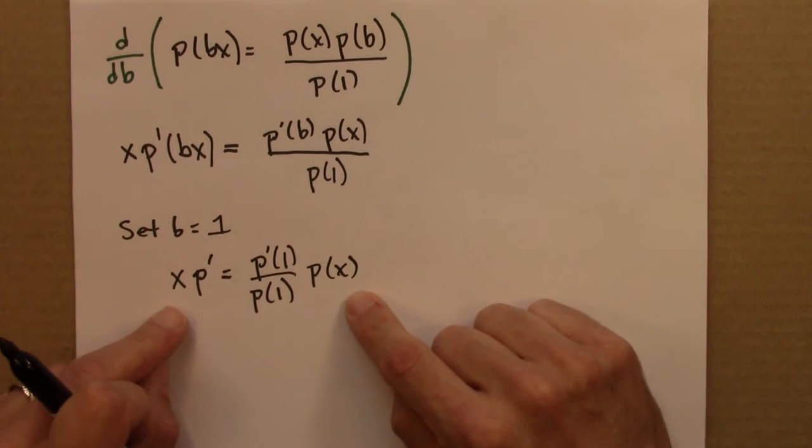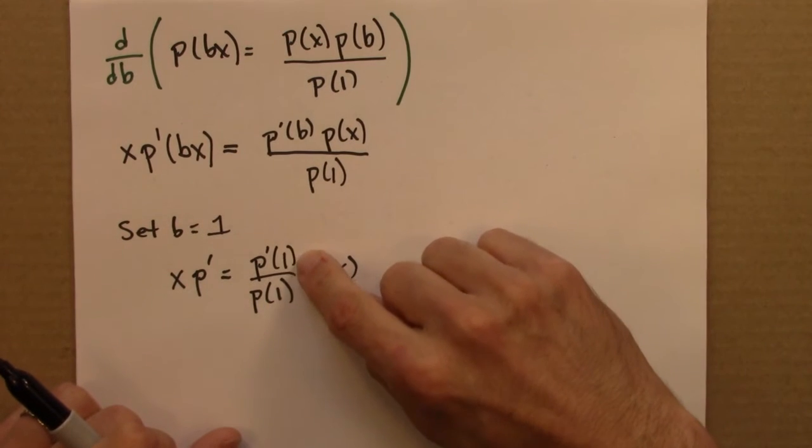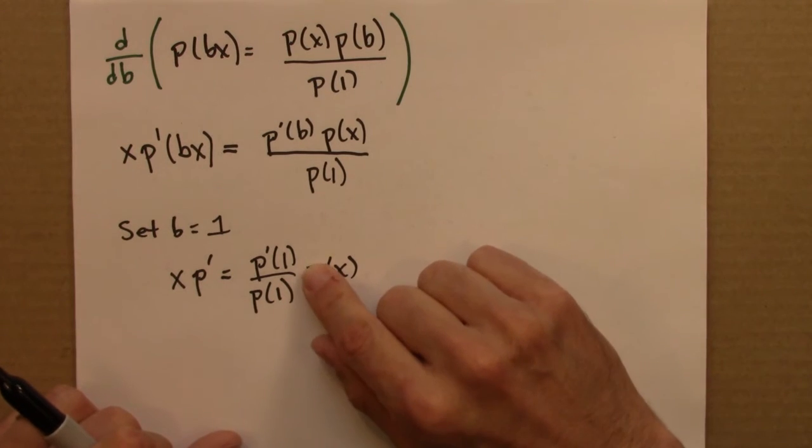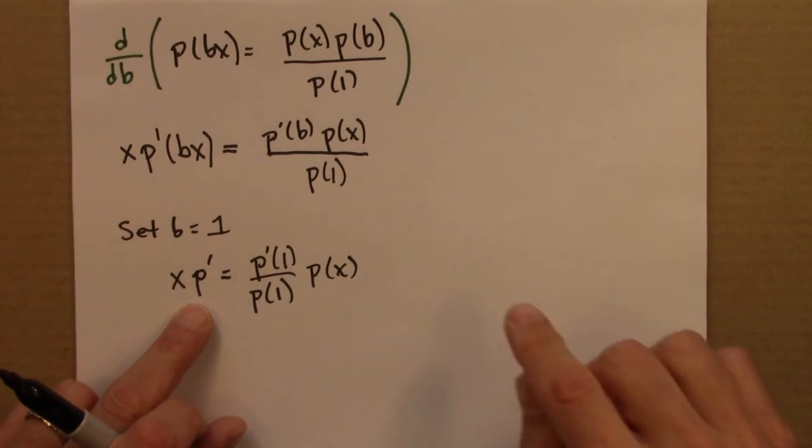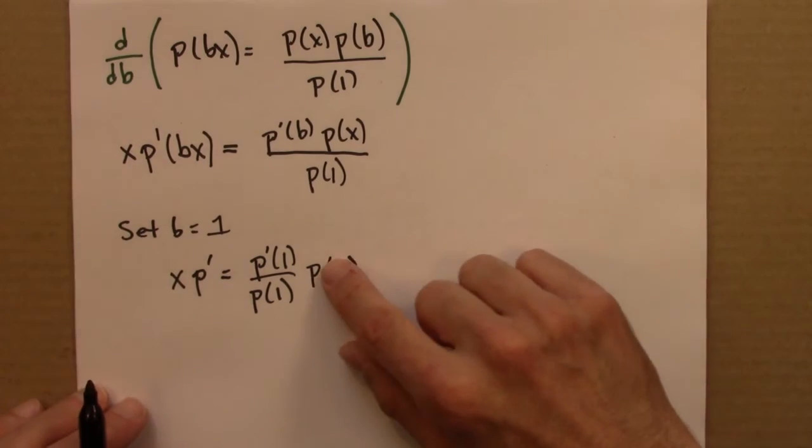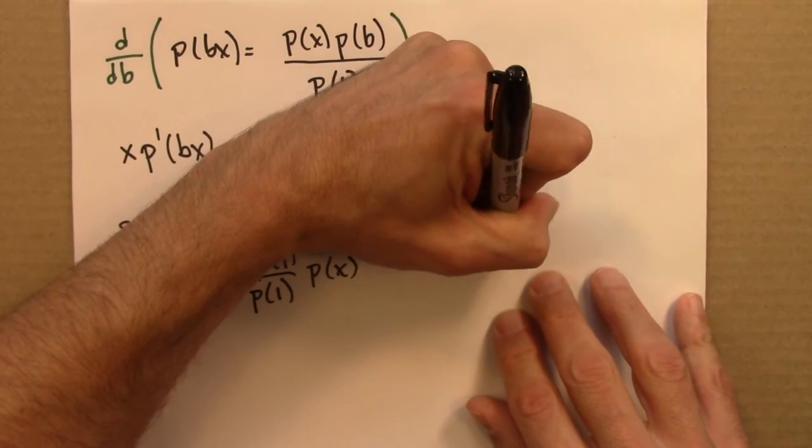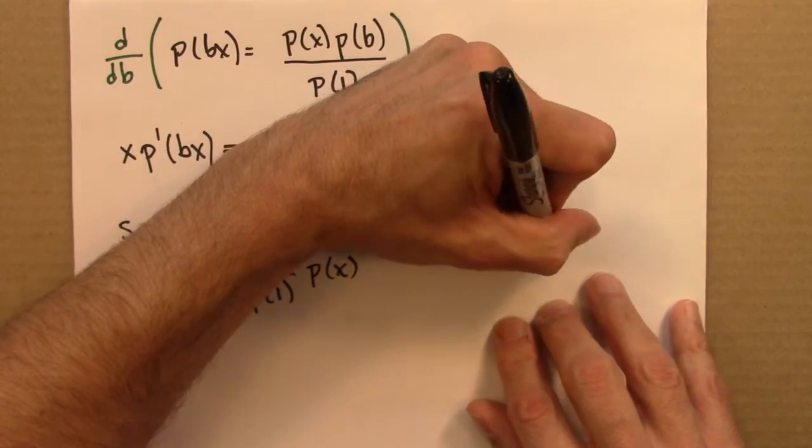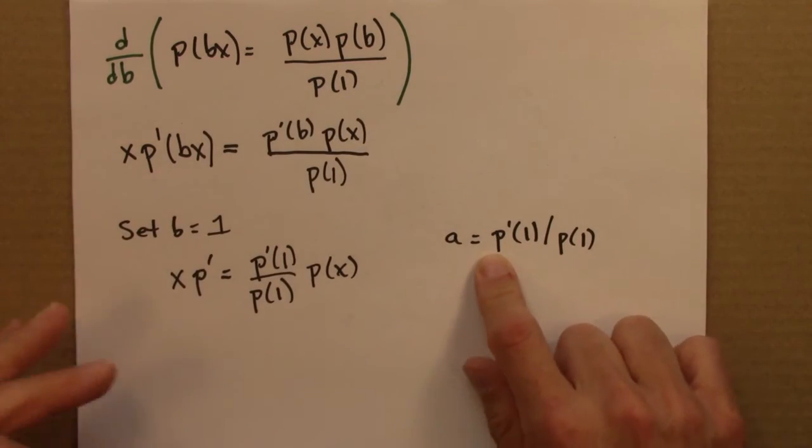So now we have a differential equation. And we can solve this. So I'm going to do a few things. P prime of 1 over P of 1, I'm going to give that a name. That's a constant. It doesn't depend on x. So we're back to thinking of x as the variable. So I'm going to call that maybe lowercase a. So a is P'(1) over P(1). That's just to save a little bit of ink.